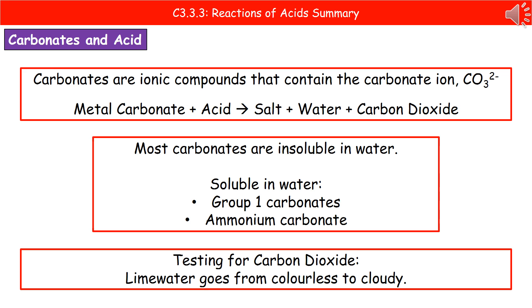Welcome to our review on the reactions of acids. We need to know two key reactions that acids have with different chemicals. The first is the reaction of acids with carbonates. Whenever we're talking about a carbonate, we're referring to an ionic compound that contains the carbonate ion, which is CO₃²⁻.